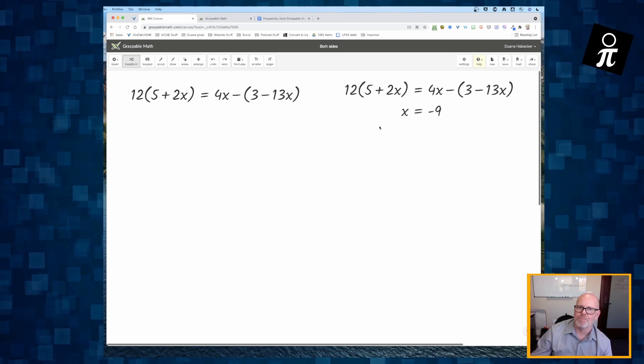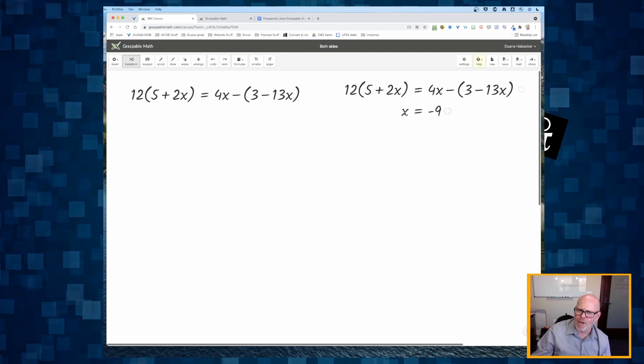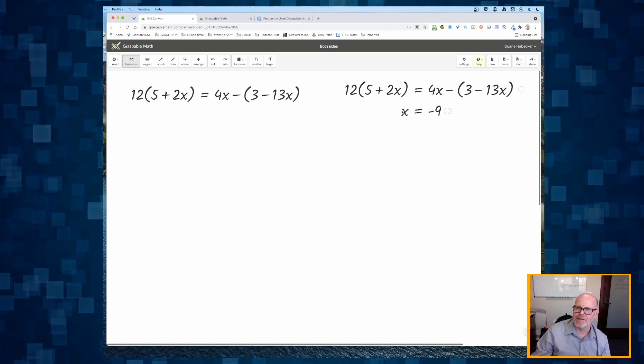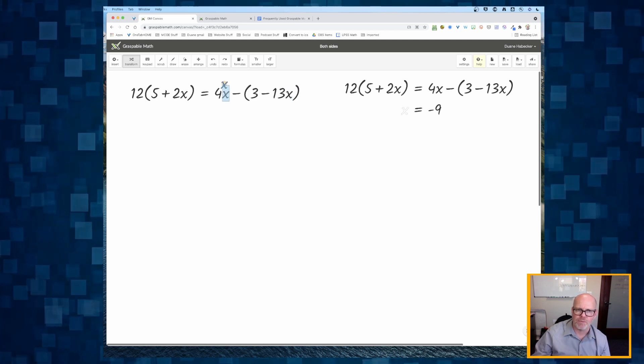Now, check this out. We think x is equal to negative 9. So I'm going to click and hold on this x on the right side. Click and hold on it. And as I mouse over, I'm clicking and holding. I haven't let go of my mouse yet.